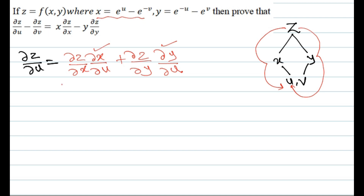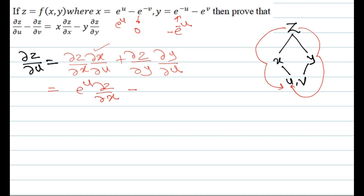We differentiate x with respect to u. The differentiation gives e^u, and the other term gives 0, so ∂x/∂u = e^u. Therefore the first term is e^u · (∂z/∂x). Differentiating y with respect to u: e^(-u) times the differentiation of (-u) is -1, so ∂y/∂u = -e^(-u). The value of ∂z/∂u is: e^u · (∂z/∂x) - e^(-u) · (∂z/∂y).